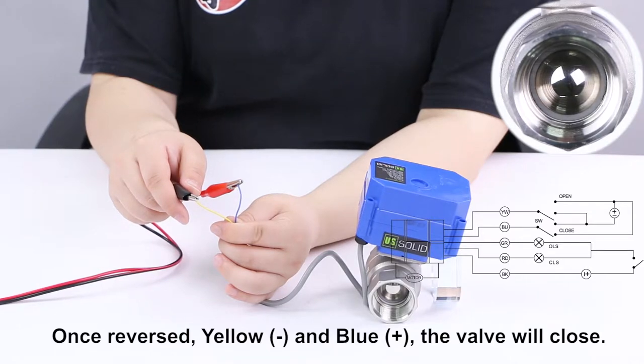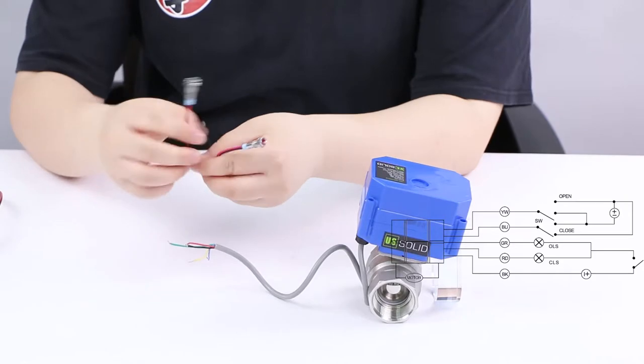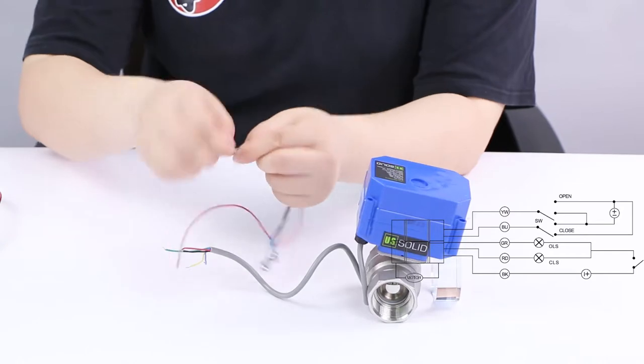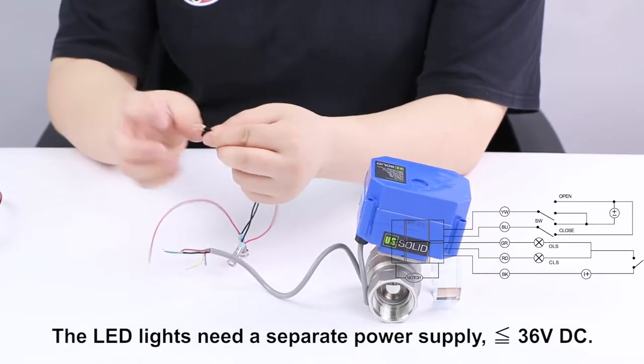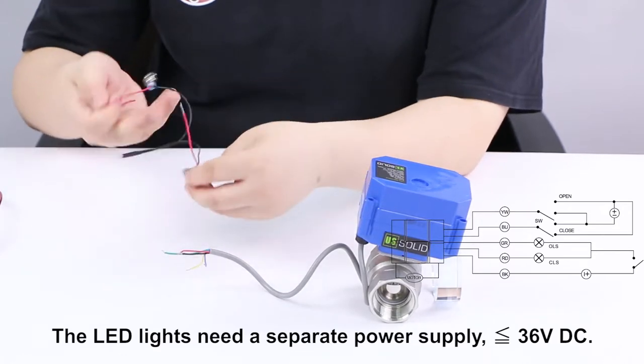The main difference between 2 wire reverse polarity and 5 wire setup motorized ball valves is that 5 wire setup valve can be connected to 2 separate indicator lights. So it is simple to see if the valve is open or closed.